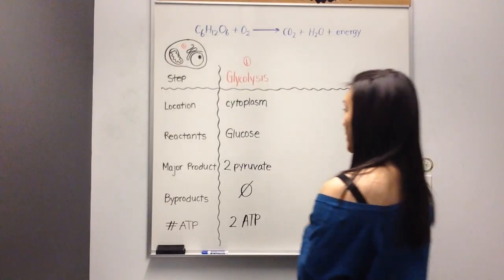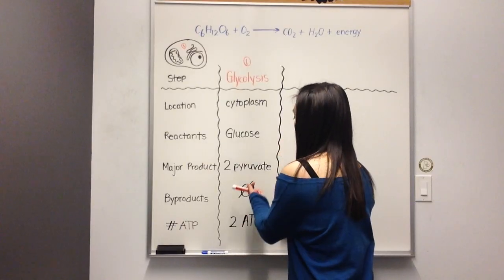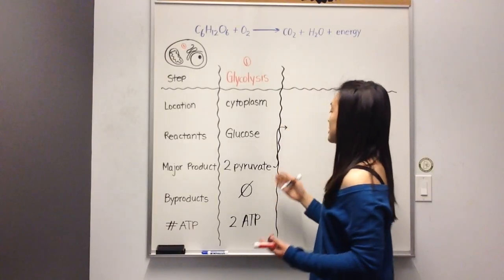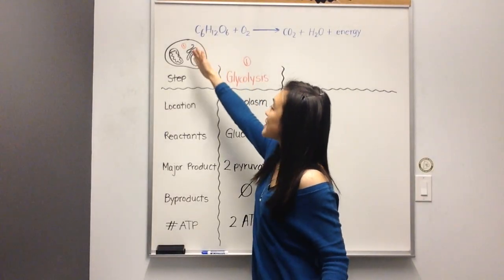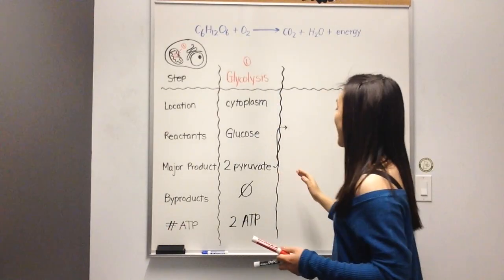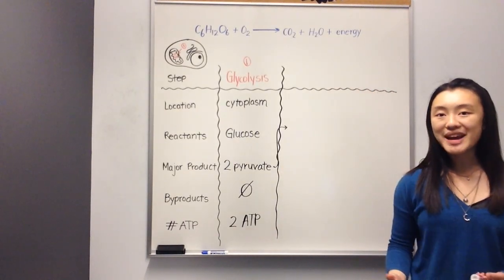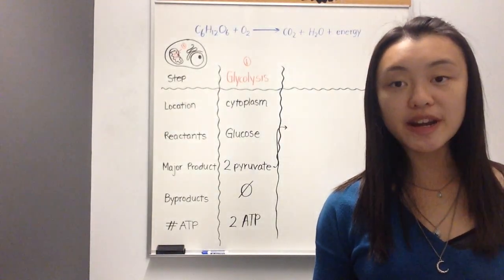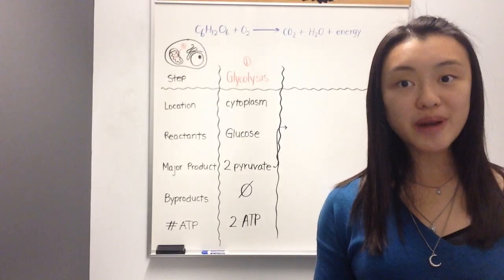The second step of cellular respiration no longer occurs in the cytoplasm. Instead, the two molecules of pyruvate that we just produced will move on somewhere else. So what will happen to the two molecules of pyruvate? They actually move from the cytoplasm directly into the mitochondria. After a series of modifications, as soon as pyruvate moves into the mitochondria, we can begin the second step, which is known as the citric acid cycle. You may also see the citric acid cycle written as TCA, which stands for tricarboxylic acid cycle, or the Krebs cycle.